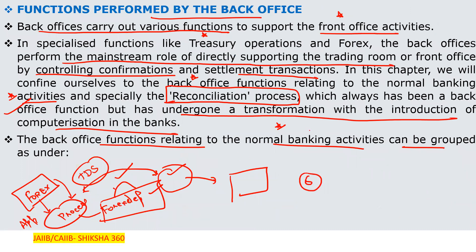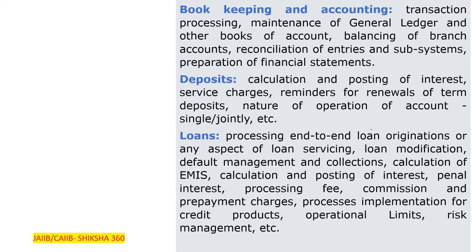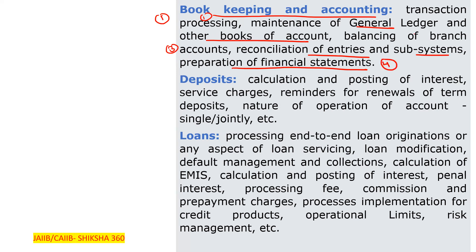Please remember all six back office functions related to normal banking activities, as the examination will ask which of the following are back office functions. The first function is bookkeeping and accounting, which includes: transaction processing, maintenance of journal ledger and other books of account, balancing of branch accounts, reconciliation of entries and subsystems, and preparation of financial statements.